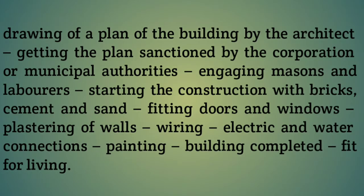The flowchart shows the process of constructing a building. The first point is: drawing of a plan of the building by the architect. Next, getting the plan sanctioned by the corporation or municipal authorities. This plan is sanctioned by the corporation.